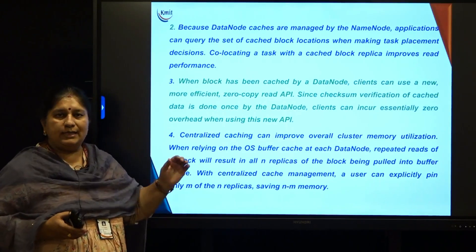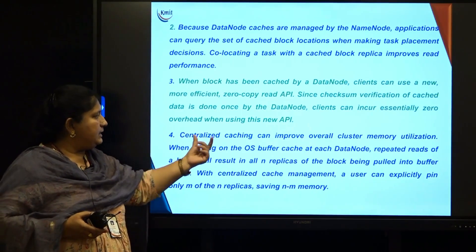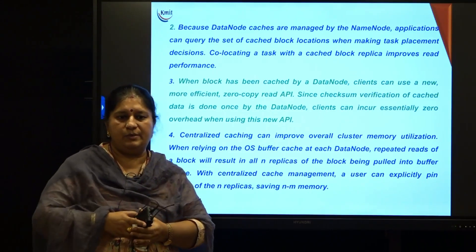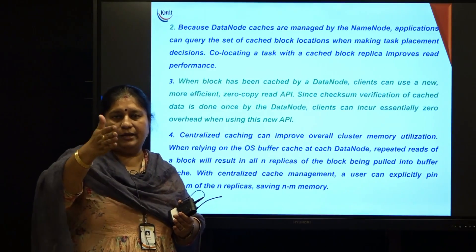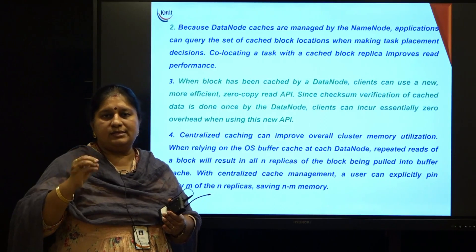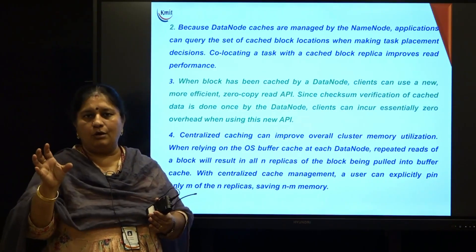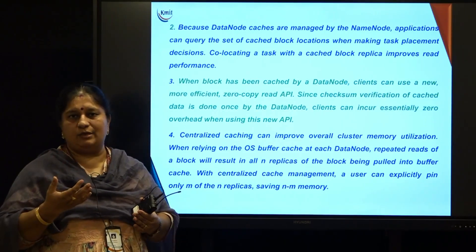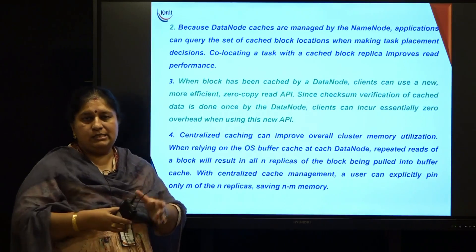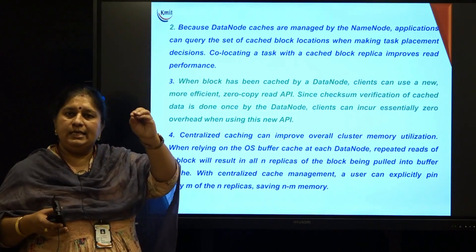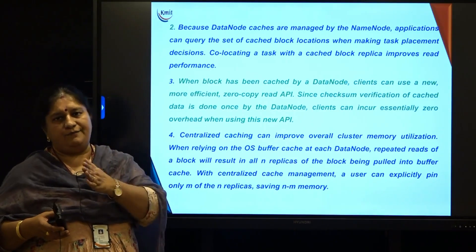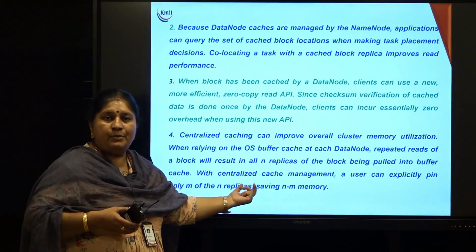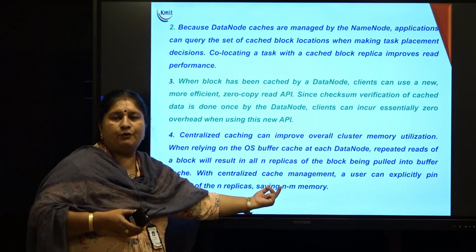Centralized cache can improve overall cluster memory utilization. With centralized memory access, say there is a file spread across three data nodes and all blocks are frequently accessed. Everyone will try to put those blocks into cache memory, which could result in multiple copies of the same block across the network — which is unnecessary. What HDFS configuration suggests is: for a block of a file, keep only a specified number of replications, and the rest can be evicted. For example, if there are n replicas of a block, you can keep only m, thereby vacating n minus m memory locations.